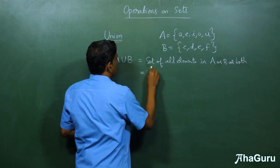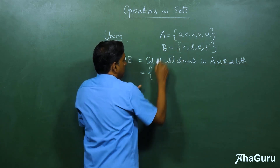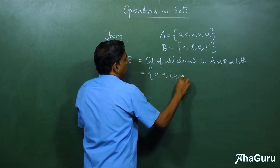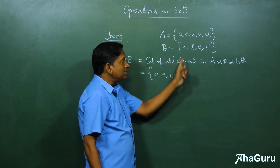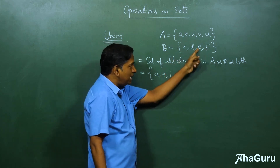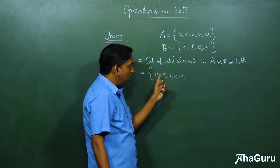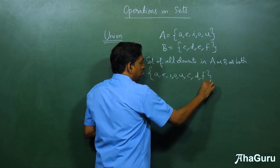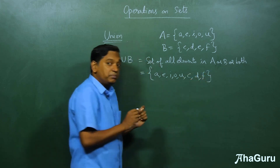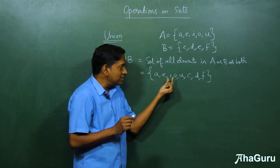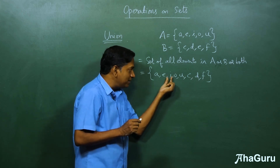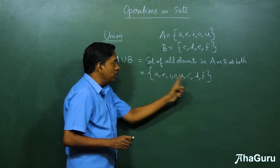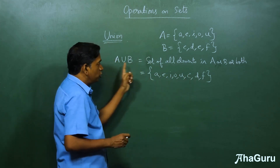So this will be A, E, I, O, U — but you can't just add C, D, E, F because E is already listed. So we add C, D, F. Remember, a set must be well defined in the sense that items should not repeat. So this is the union of the two sets.